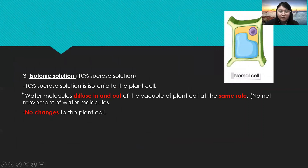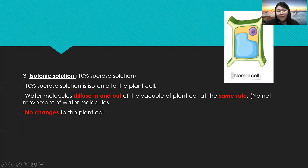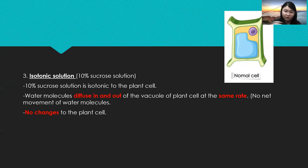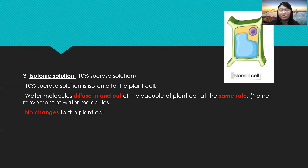For isotonic solution — 10% sucrose solution — 10% sucrose solution is isotonic to the plant cell. Water molecules diffuse in and out of the vacuole of the plant cell at the same rate. No net movement of water molecules, so no changes to the shape of the plant cell.